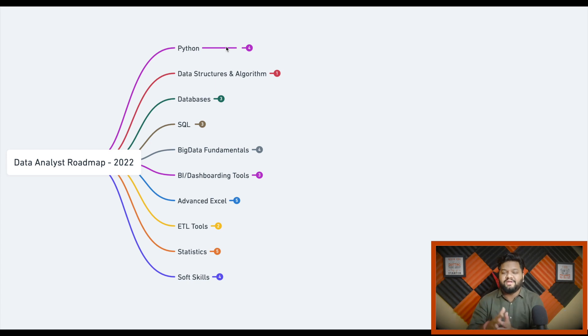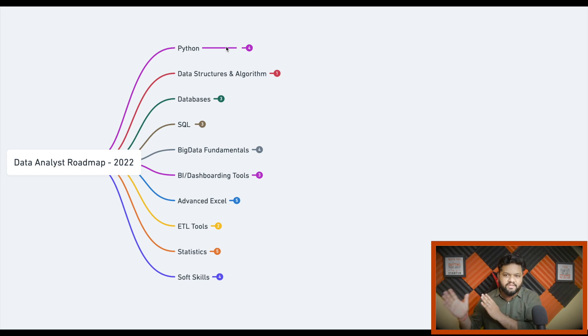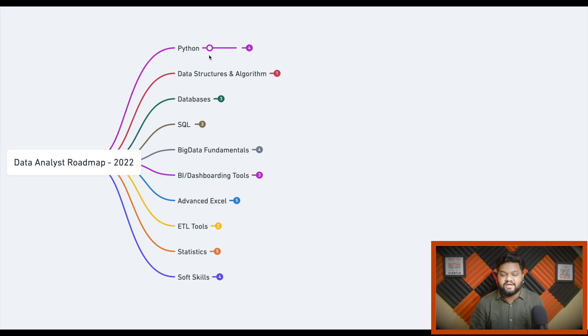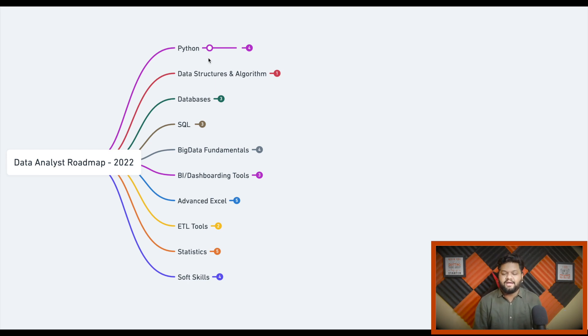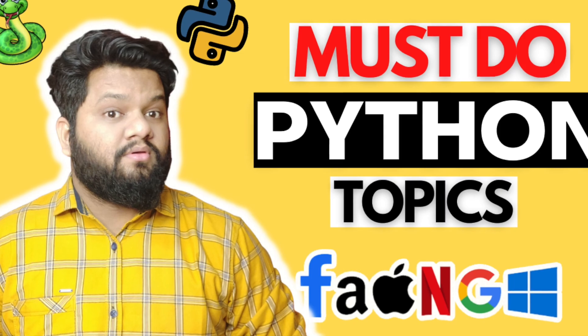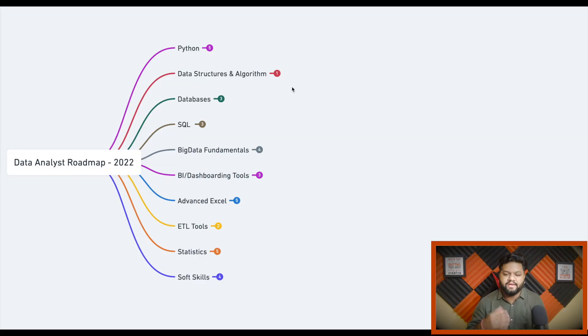Python is the preferred choice whether you move into data science, data analytics, or data engineering. You can also explore the R language — it has great support for data visualization and analysis libraries. I've created a detailed video on important Python topics at a granular level, with resource links included, so check that out.